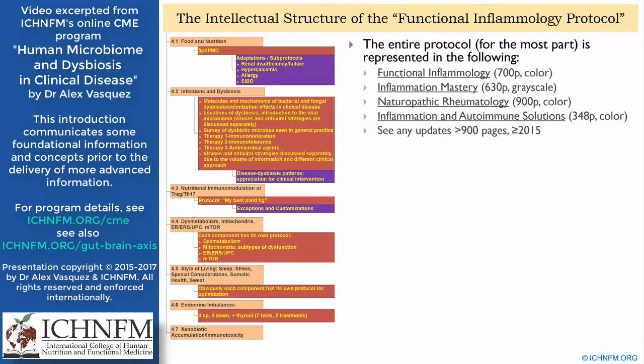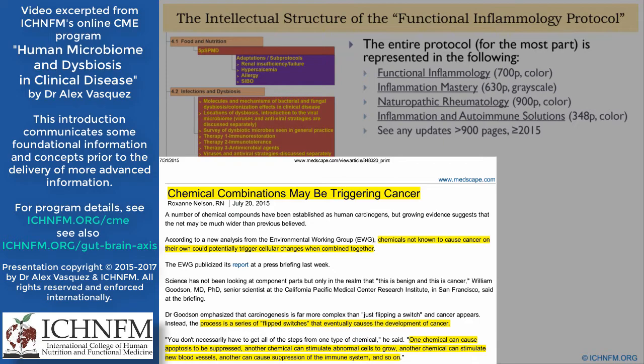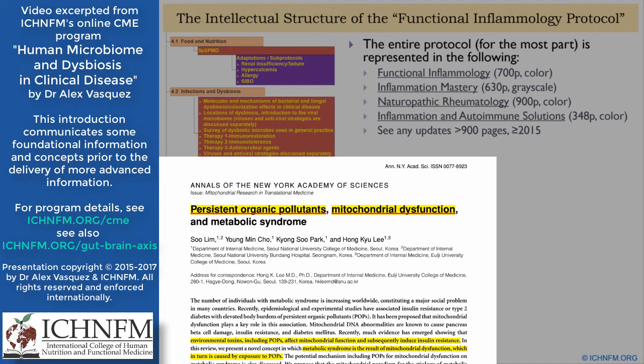Finally, we're all exposed to xenobiotics due to lack of government regulation and corporate irresponsibility. Those xenobiotics, or persistent organic pollutants, have an effect on our immune system just like they have an effect on our mitochondria. You can see direct correlations between metabolic illness, mitochondrial dysfunction, and the total xenobiotic load — or the total load of persistent organic pollutants.